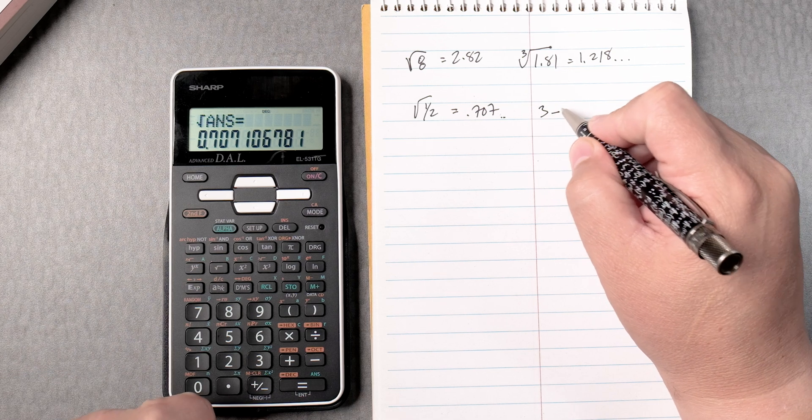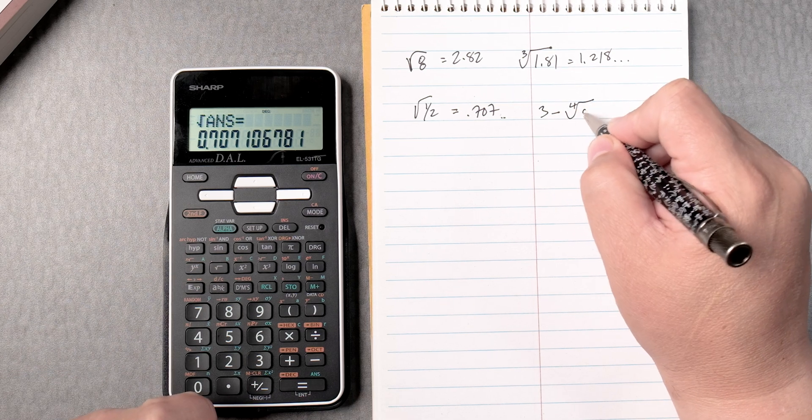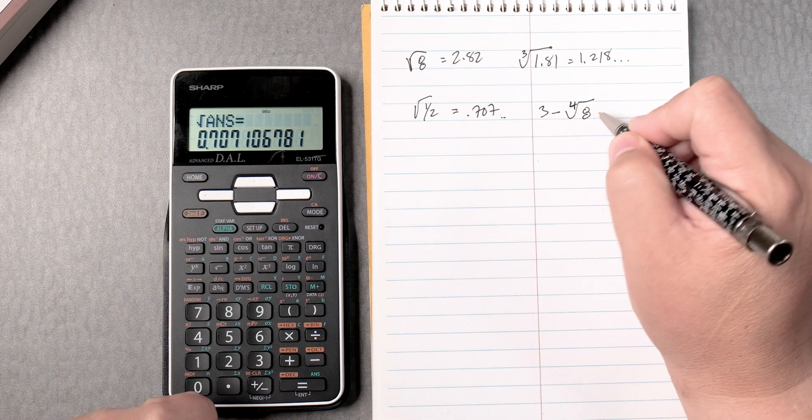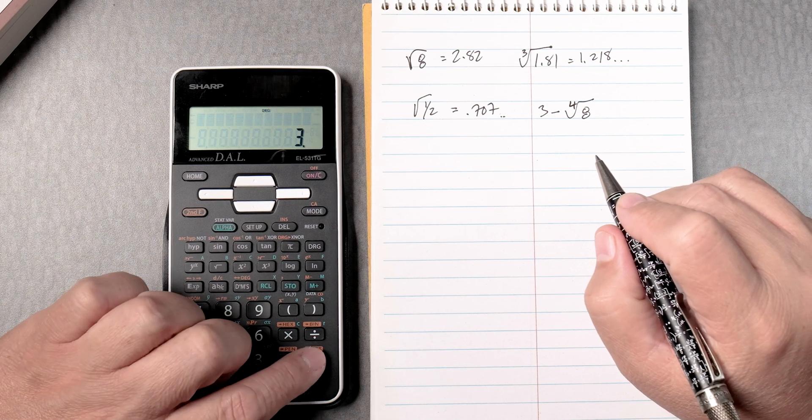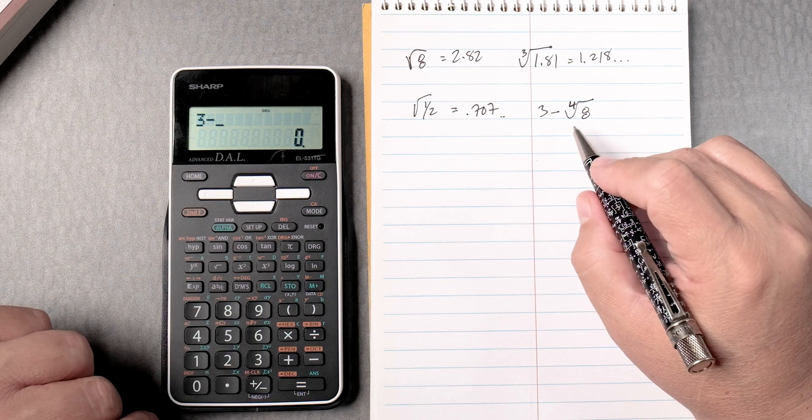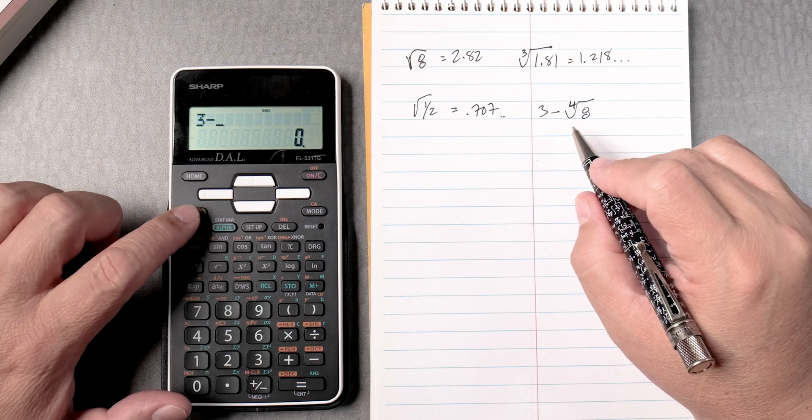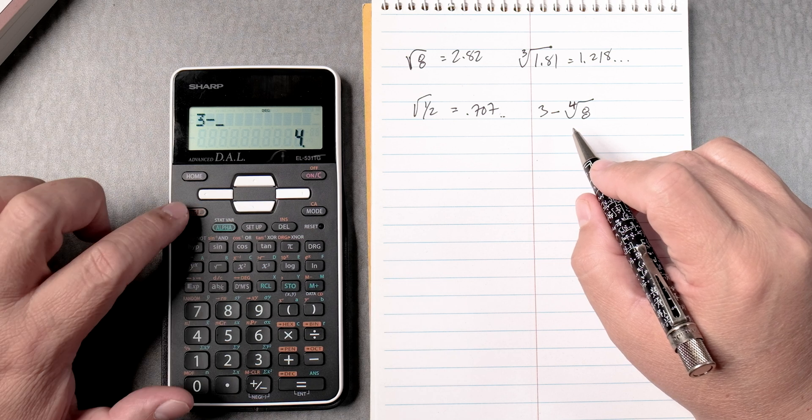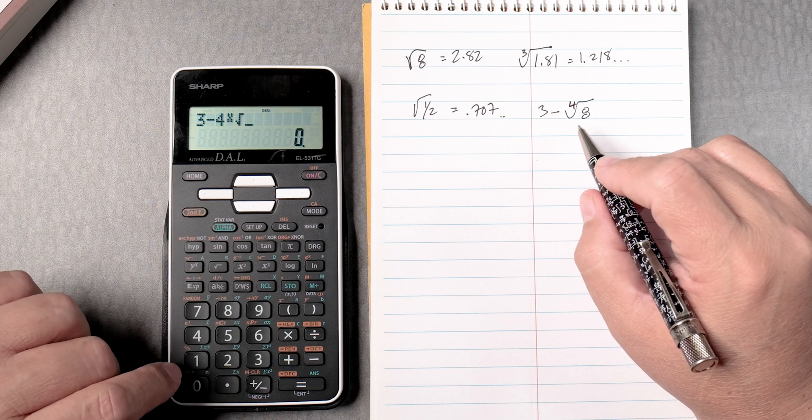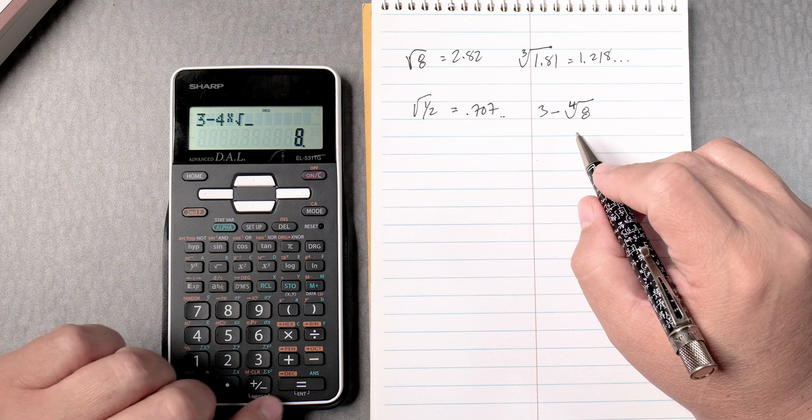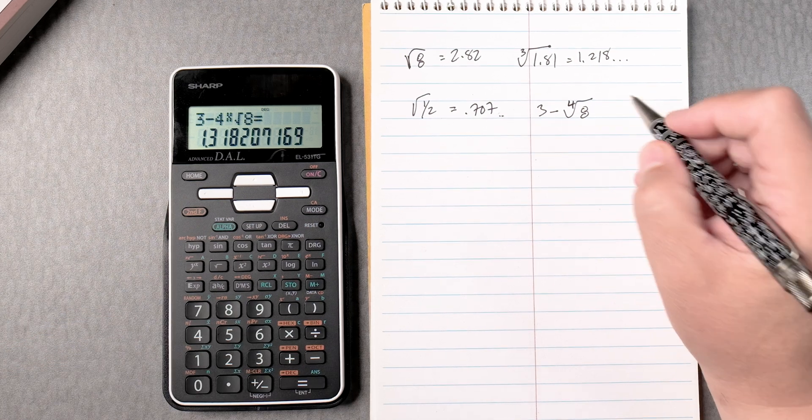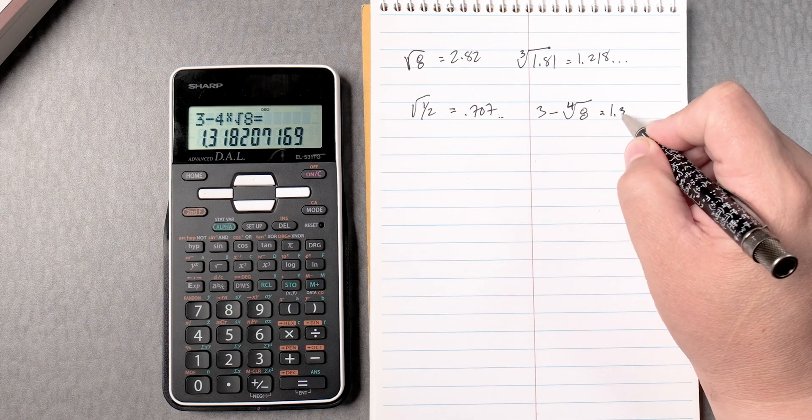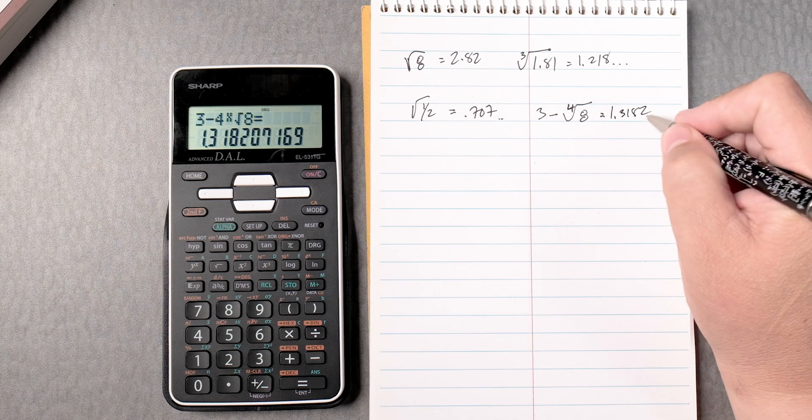Let's say 3 take away the fourth root of 8. So 3 take away, and then you type in 4, second, y to the x, 8, and then press equals and it gives you 1.3182 and it keeps going.